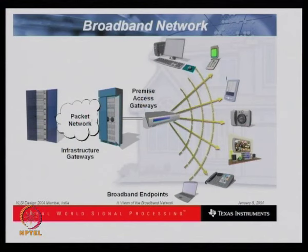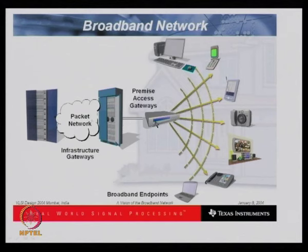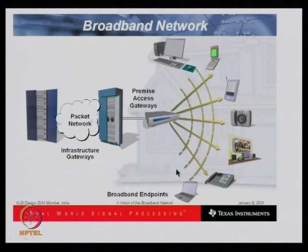Digital designers must properly interface with analog and RF systems. A broadband network diagram shows infrastructure gateways passing packet data through storage and transceivers via antennas, then to access gateways connected with PCs, mobiles, iPads, cameras, TVs, printers, and laptops. Broadband can connect almost all kinds of equipment via the internet, and chips must be designed for each specific interface in this ecosystem.